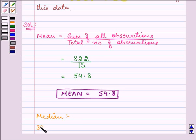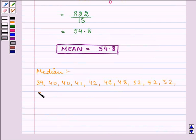That will be 39 then 40, 40, 41, 42, 42, 46, 48, 52 is appearing 3 times, then 54, 60, 62, 96, 98.